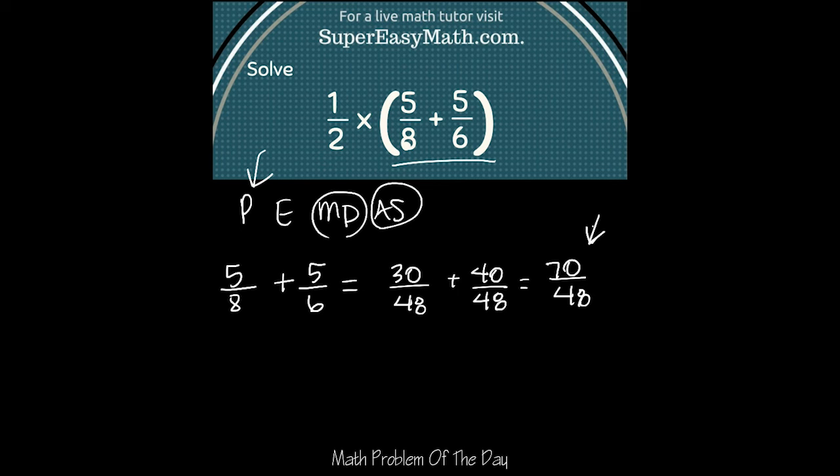So now I'm going to take that 70/48 and I'm going to plug it in where the parentheses were in the original problem. So I'm left with 1/2 times 70/48, and you get 70/96.